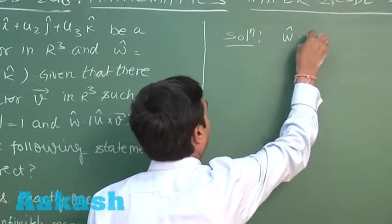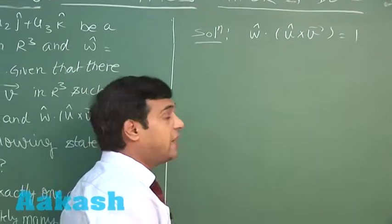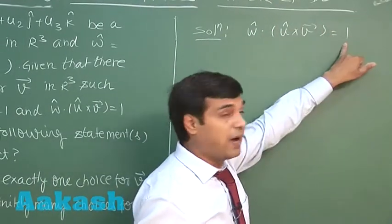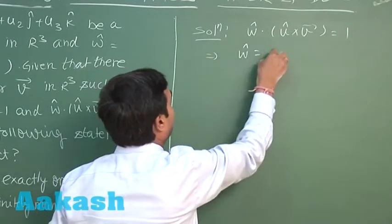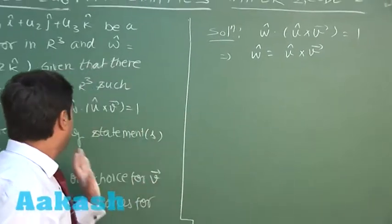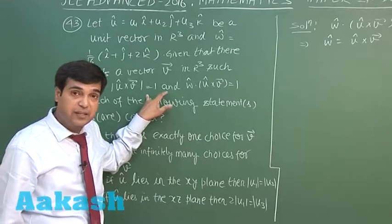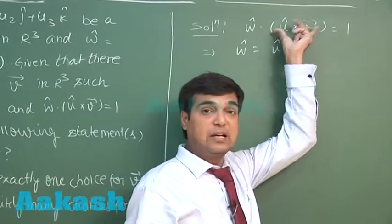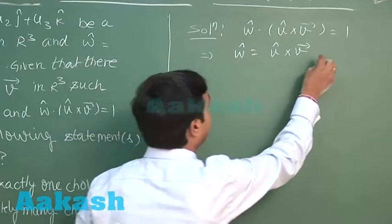Since w-cap · (u-cap × v) = 1, the dot product of two vectors equals 1, meaning w-cap equals u × v. Since w-cap is a unit vector and |u-cap × v| is also 1 — meaning it is also a unit vector — when you take the dot product of the two, you get |w||u × v|·cosθ = 1. So clearly these two vectors are equal.